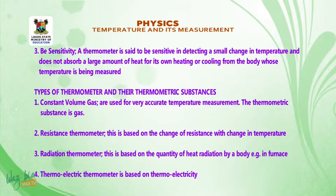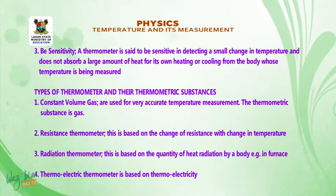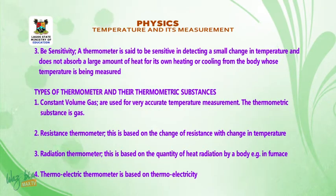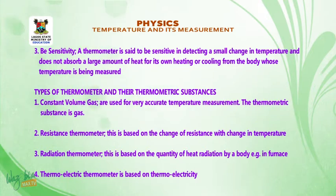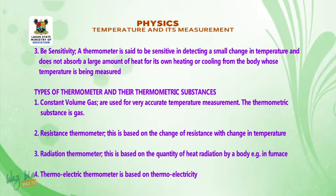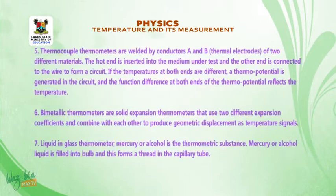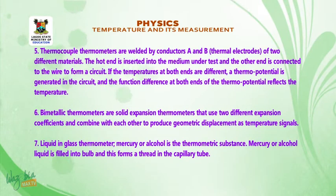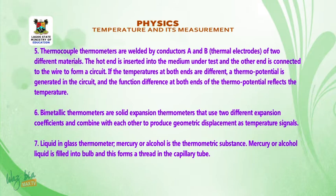Types of thermometers and their thermometric substances: 1. Constant volume gas thermometer — used for accurate temperature measurement; the thermometric substance is gas. 2. Resistance thermometer — based on the change of resistance with change in temperature. 3. Radiation thermometer — based on the quantity of heat radiation from a body, e.g., in a furnace. 4. Thermoelectric thermometer — based on thermal electricity. 5. Thermocouple thermometer — made of two conductors A and B of two different materials.